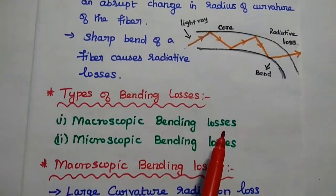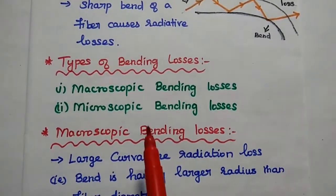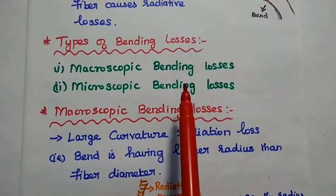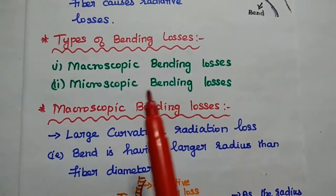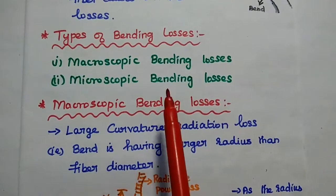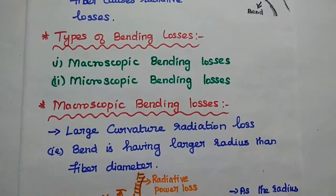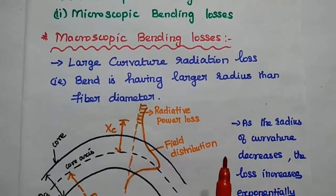There are two types of bending losses available in fiber. Here, macroscopic bending losses, simply macro bending losses. The next one is microscopic bending losses. So, let's start with this macroscopic bending losses.